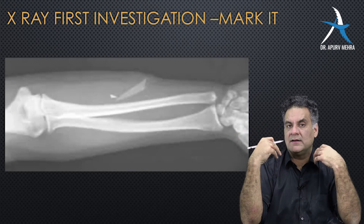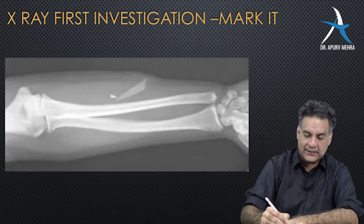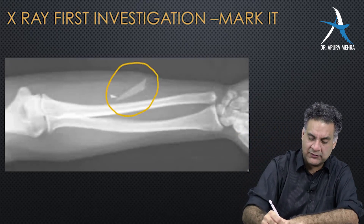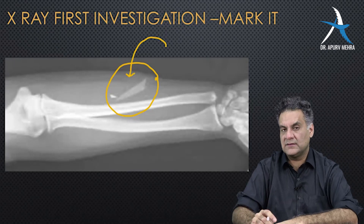One more thing X-ray can show you is anything which is radiopaque. Glass pieces are coated with lead at the back, which is why X-ray is often the first investigation used to pick up glass pieces.